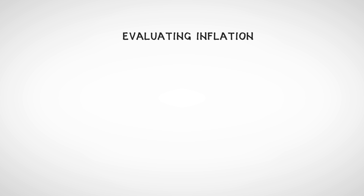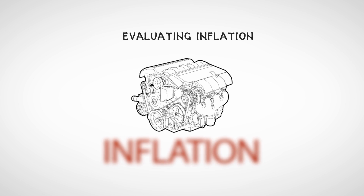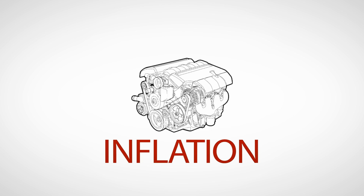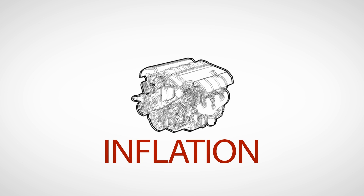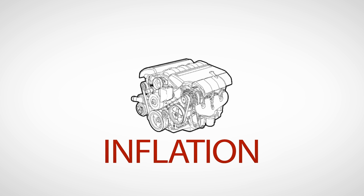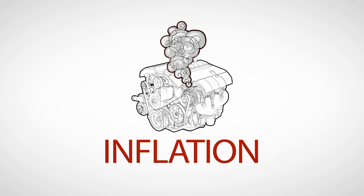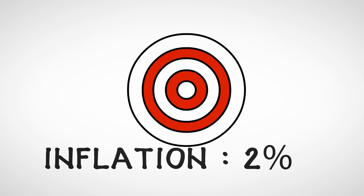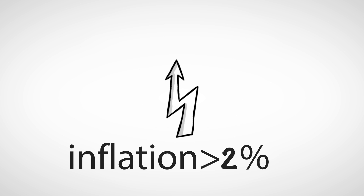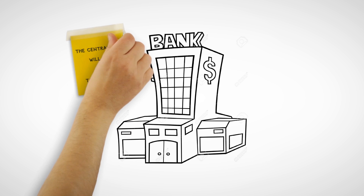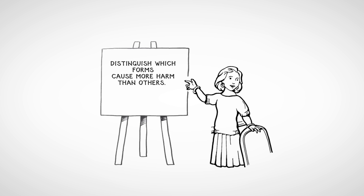Evaluating Inflation. It's important to note that some inflation is healthy and acceptable. Problems start to arise when inflation rises out of control, generally above 2-3%. For example, some countries have a formal or informal inflation target of about 2%. When the economy exceeds this number by a certain amount, the central bank will meet and take action. Not all inflation is created equal — it is important to distinguish which forms cause more harm than others. Be mindful of this as you come to grips with the topic. Happy studying!